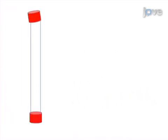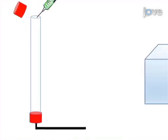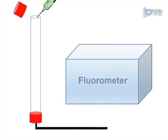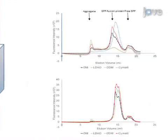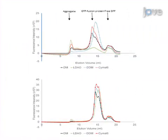Finally, the total membrane fraction is solubilised in four different detergents, and the monodispersity of the detergent-solubilised GFP proteins is analysed by size exclusion chromatography. Ultimately, the proteins can be monitored by fluorescence and the elution profiles plotted to assess the aggregation, monodispersity and free GFP in the samples.